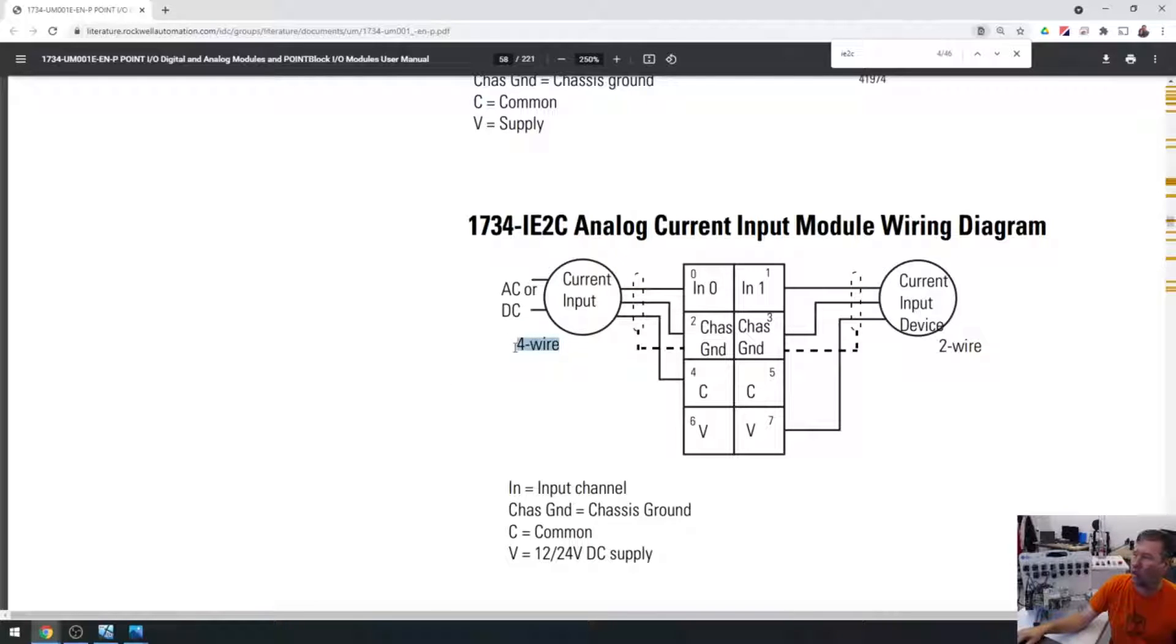Well, if you look right here, this is a 4 wire, and this is a 2 wire. And so in the 4 wire case, you see they kind of show two more wires going over here, and then they say AC or DC. It's still not super clear.